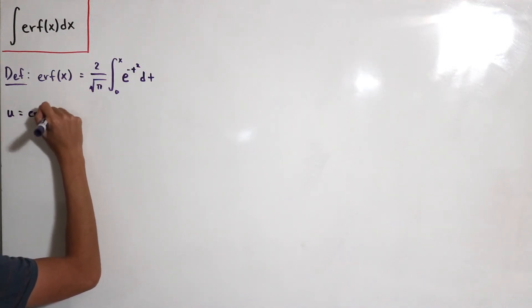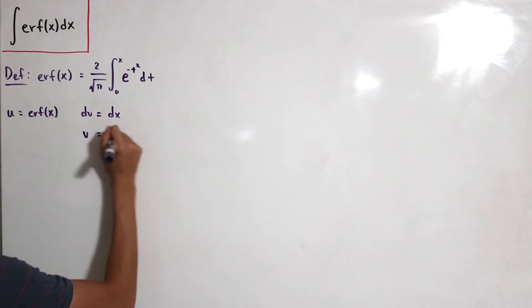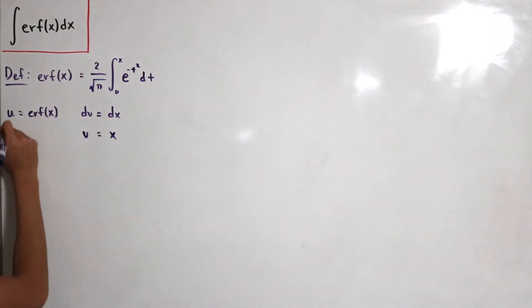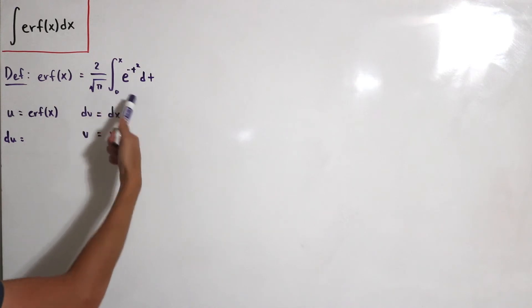dv is equal to dx. And then we know how to integrate this, this is just that v is equal to x. But now the question is how do you differentiate the error function of x?